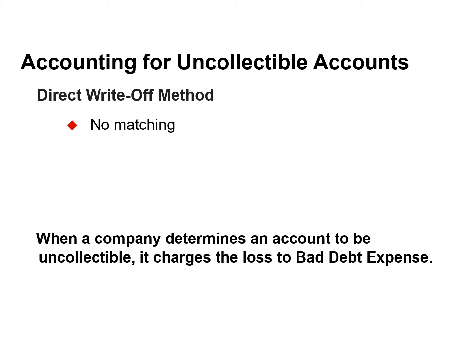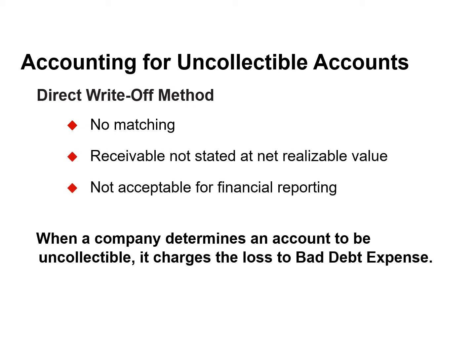Under the direct write-off method, when a company determines an account to be uncollectible, it charges the loss to bad debt expense. Bad debt expense will show only actual losses from uncollectibles. Under this method, companies often record bad debt expense in a period different from when they recorded the revenue, so no attempt is made to match bad debt expense to the credit sale. The company reports accounts receivable at its gross amount.